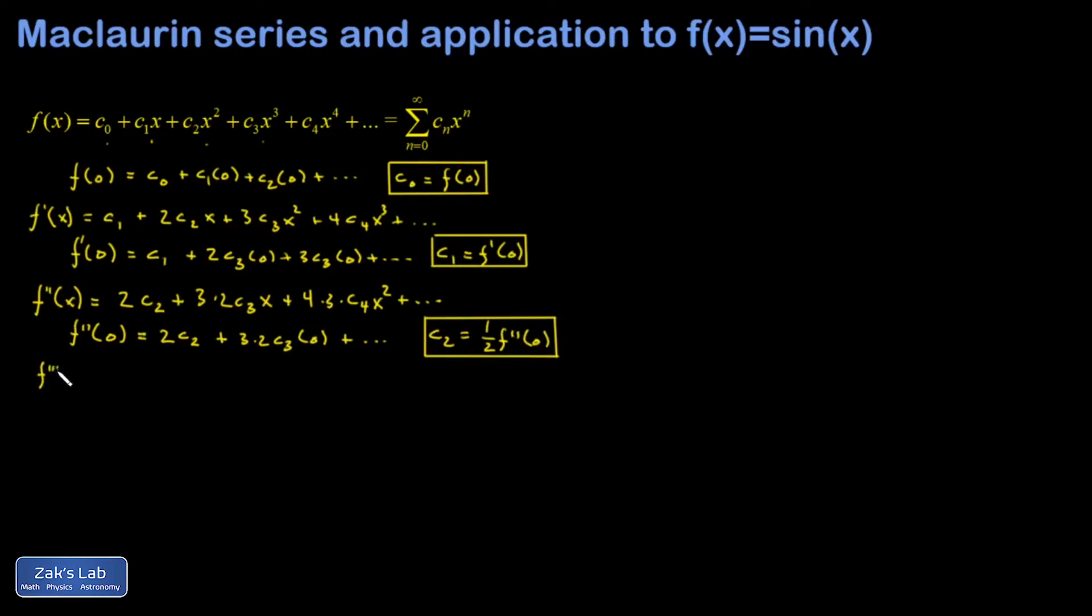Continuing this process, I take another derivative to expose another coefficient. This time, I get 3 times 2 times c3 plus 4 times 3 times 2c4x plus additional terms with higher powers of x. I evaluate this at x equals 0, and I get 3 times 2 times c3 plus terms that vanish.